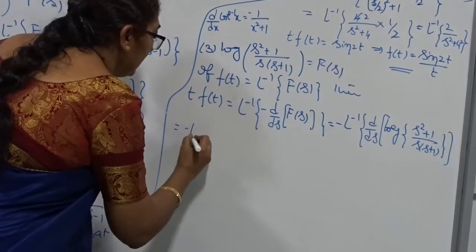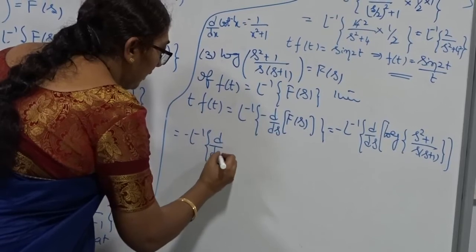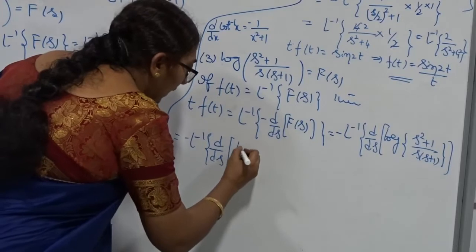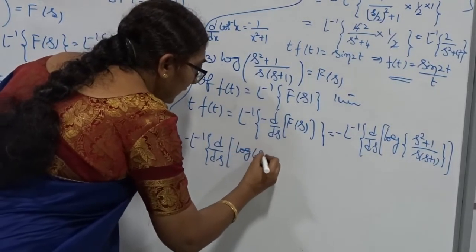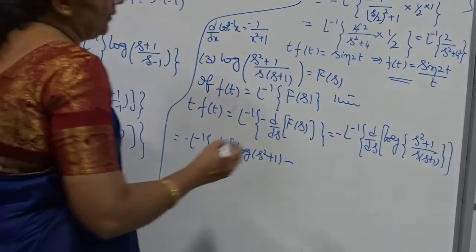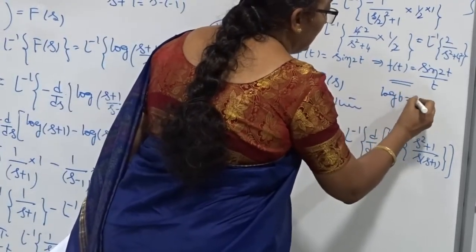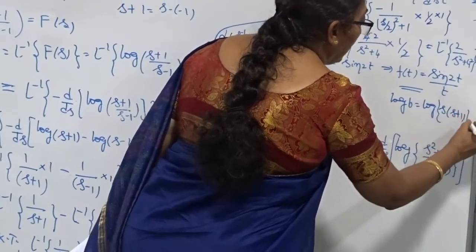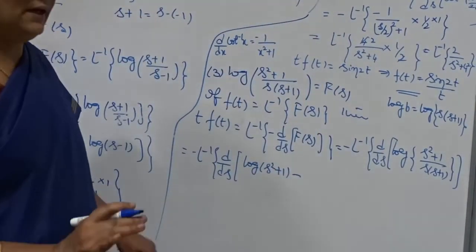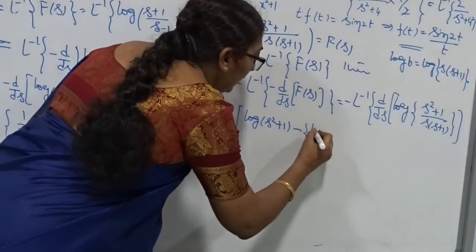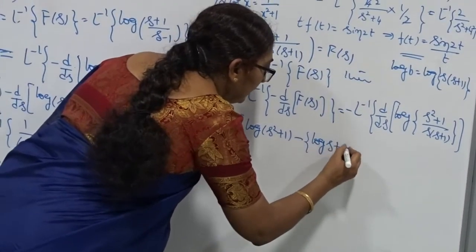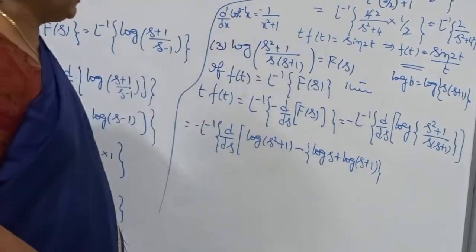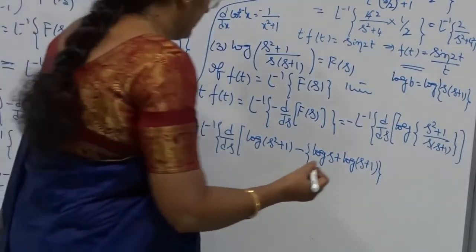Expanding: log((s²+1)/(s(s+1))) = log(s²+1) minus log(s(s+1)). And log(s(s+1)) = log(s) + log(s+1). So the expression becomes log(s²+1) minus log(s) minus log(s+1). At this stage we use both log(a/b) = log a − log b, and log(ab) = log a + log b.